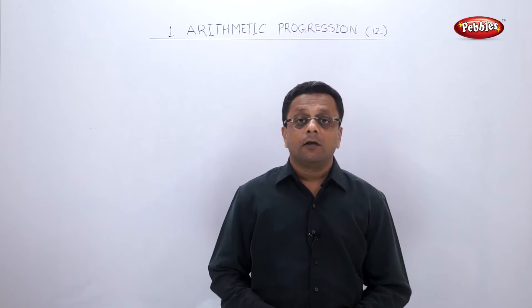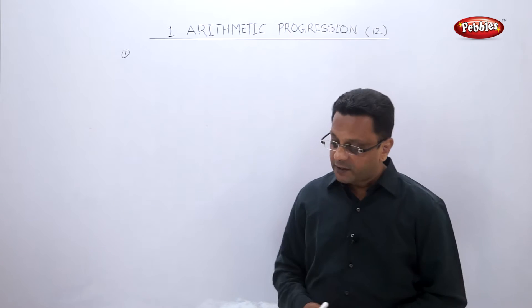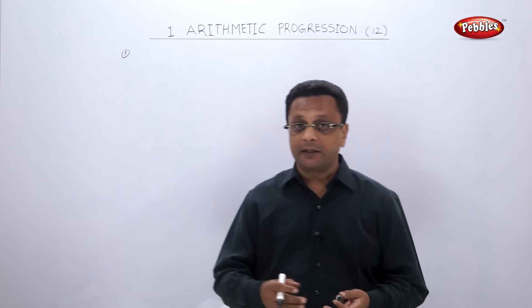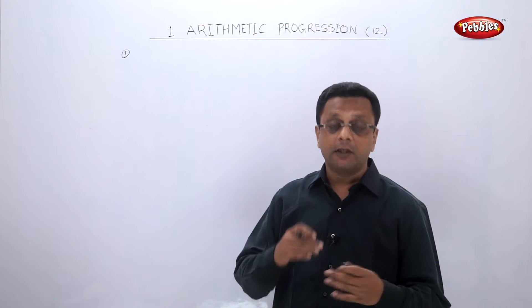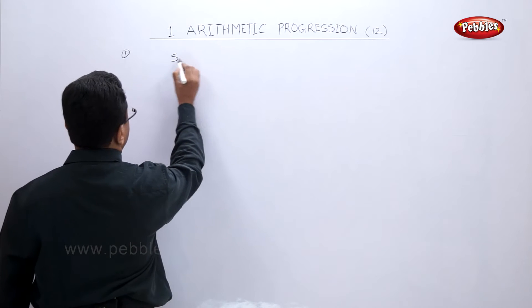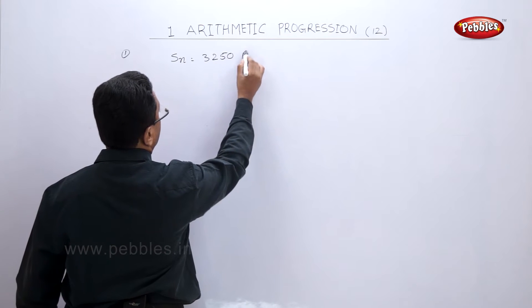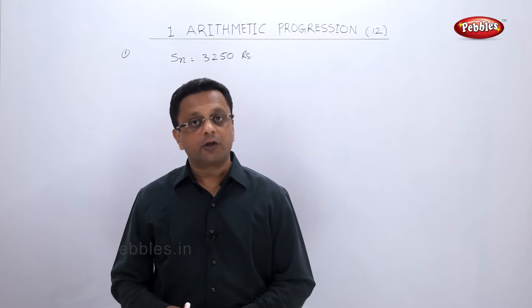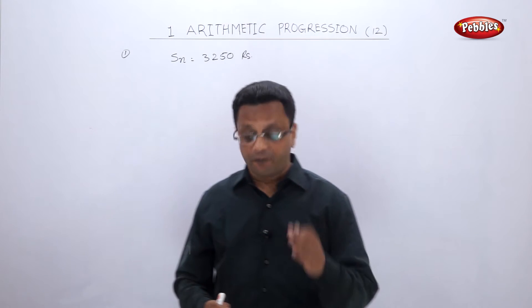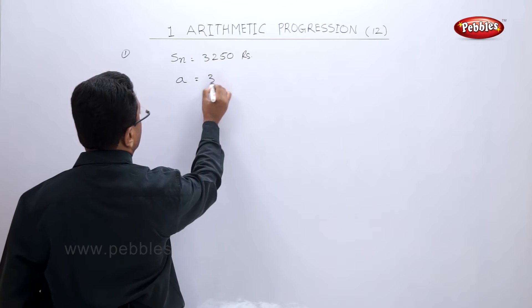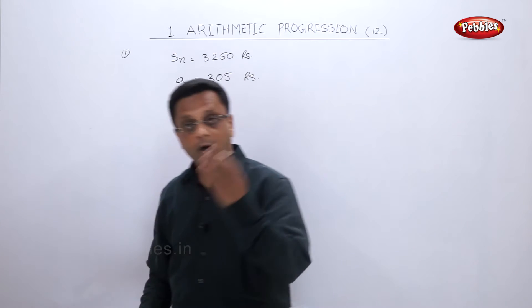Let us learn the word problems in arithmetic progression with a few solved examples. The first example: a man repays a loan of rupees 3250. The total amount he is paying is 3250, so our final figure SN is equal to 3250 rupees. He pays rupees 305 in the first month, so our first term a is equal to 305 rupees.